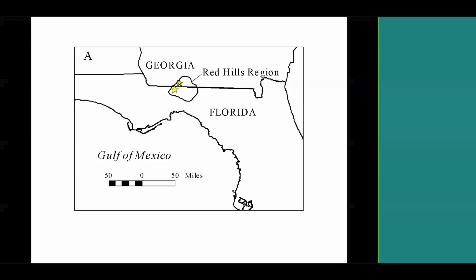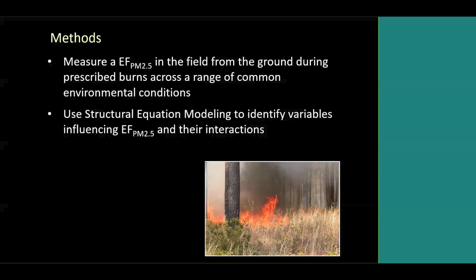Our study was conducted at both Tall Timbers Research Station just on the Florida line, and at Pebble Hill Plantation just across the line in Georgia, in a combination of old-field loblolly pine, shortleaf pine grasslands, and native longleaf pine wiregrass.